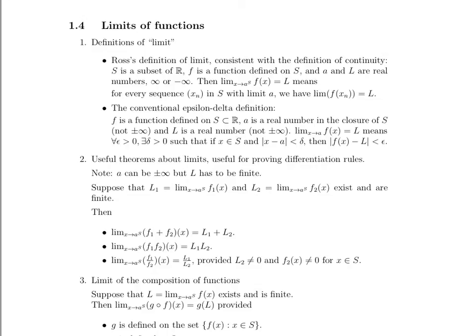Then we say the limit, as X approaches A, of F of X is equal to L means that for all epsilon greater than zero, there exists a delta that's greater than zero, such that if X is in this subset S and the distance between X and A is less than delta, then the distance between the function value of X and L will be less than epsilon.